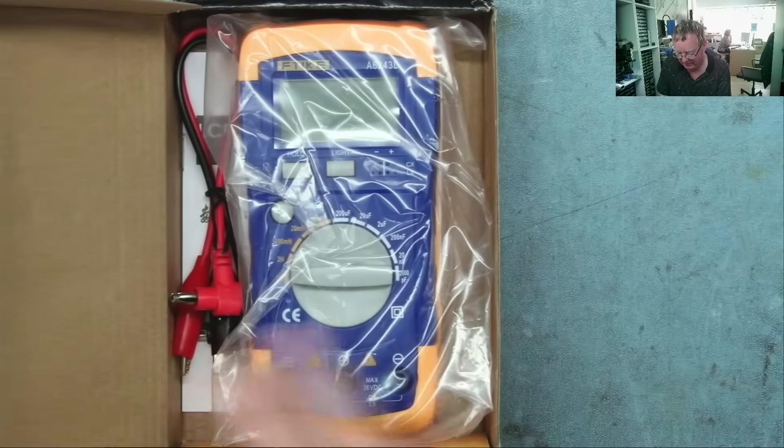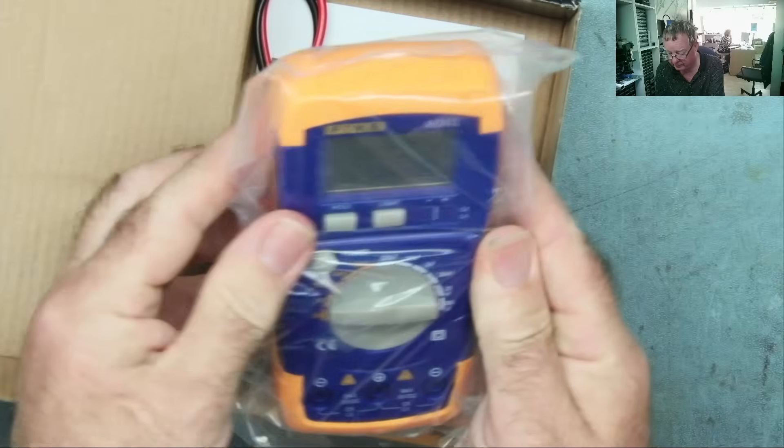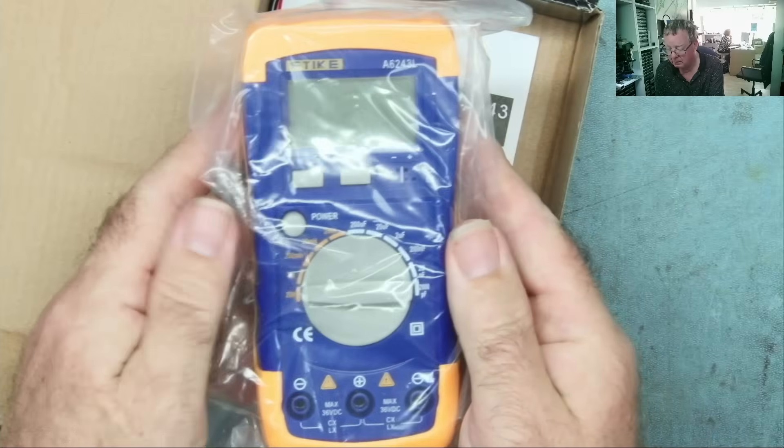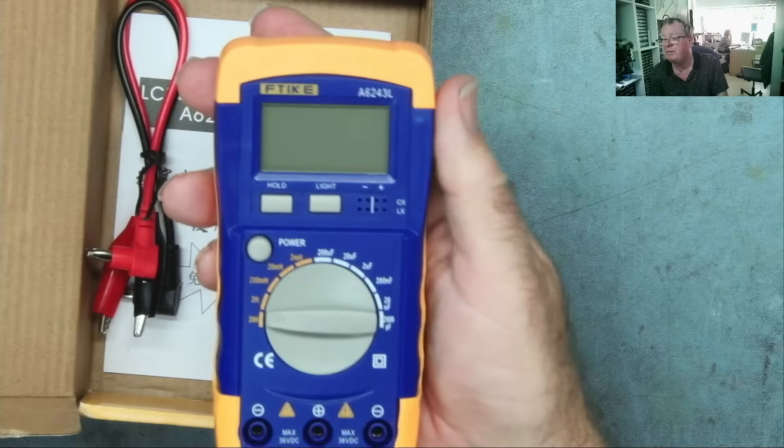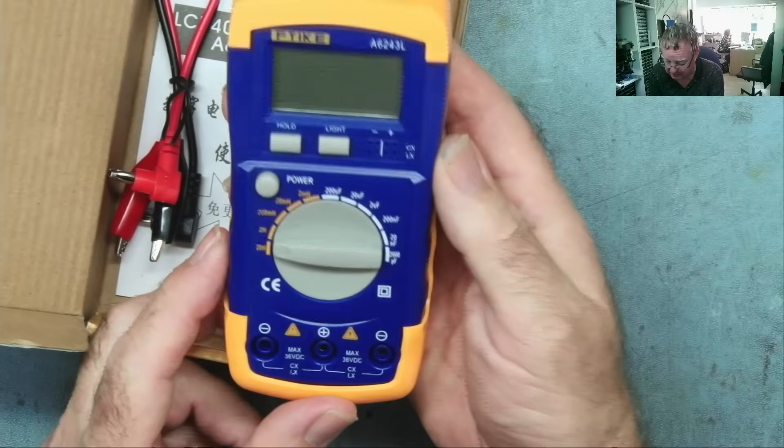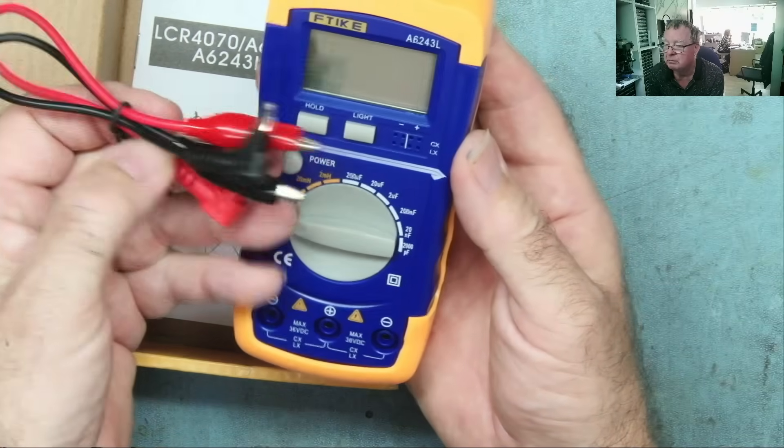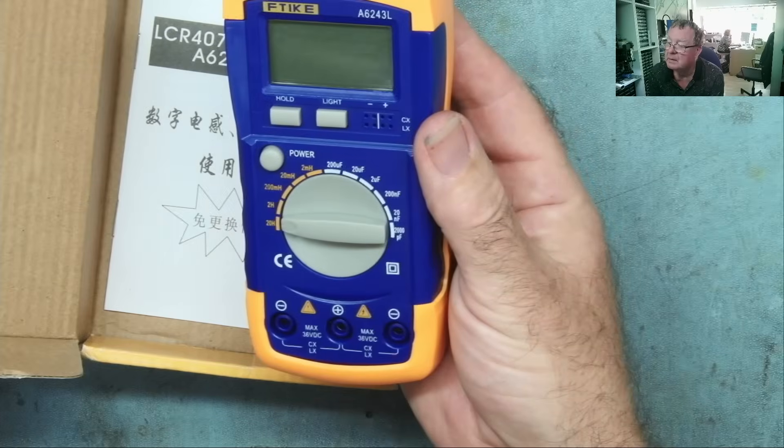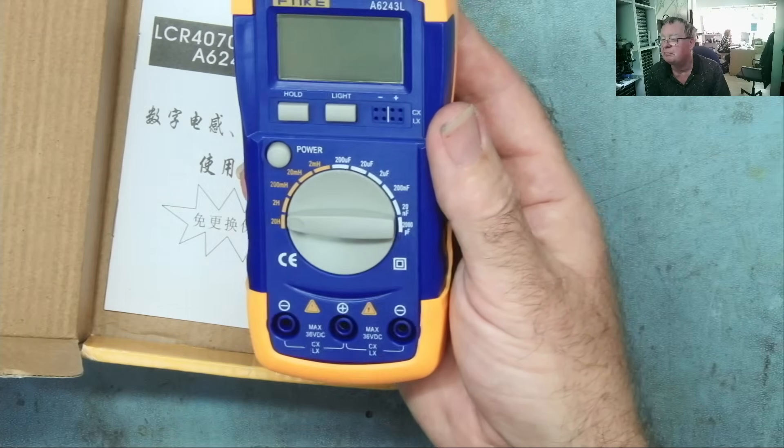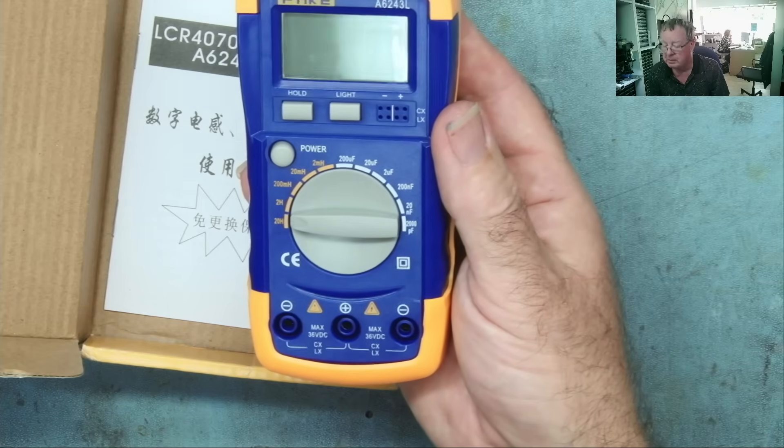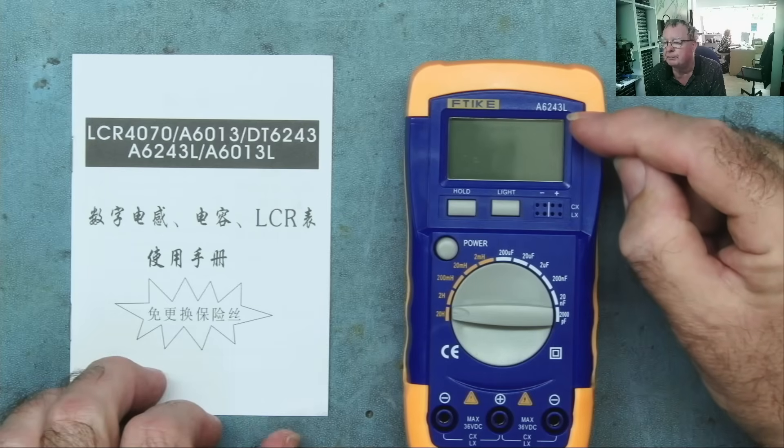Let's just take it out of the bag. So there it is. Comes with a couple of testers with crocodile clips on. And yeah, 2,000 picofarads or 2 nanofarads is the lowest range, so it will read smaller capacitors than that. This model is the A6243L.